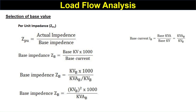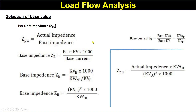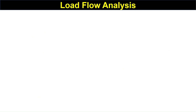Substituting the value of base impedance into the per unit impedance equation, the per unit impedance equals actual impedance multiplied by base power, divided by base voltage squared multiplied by 1000. We have now expressed all per unit quantities in terms of base voltage and base power.